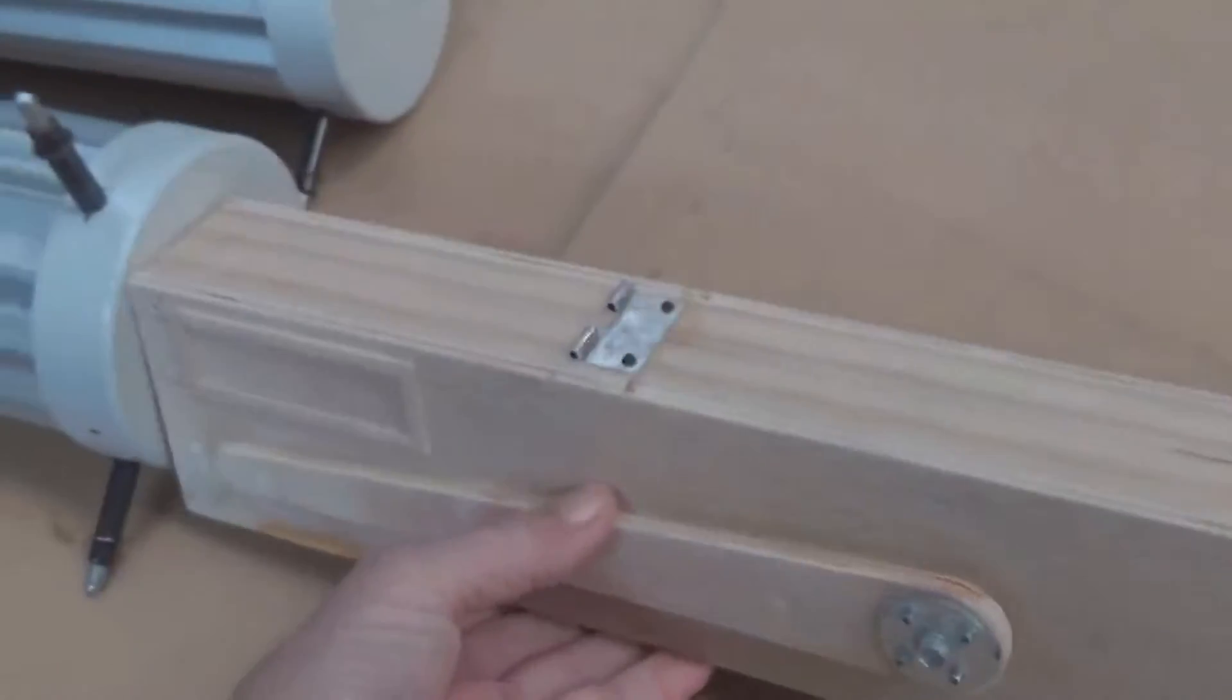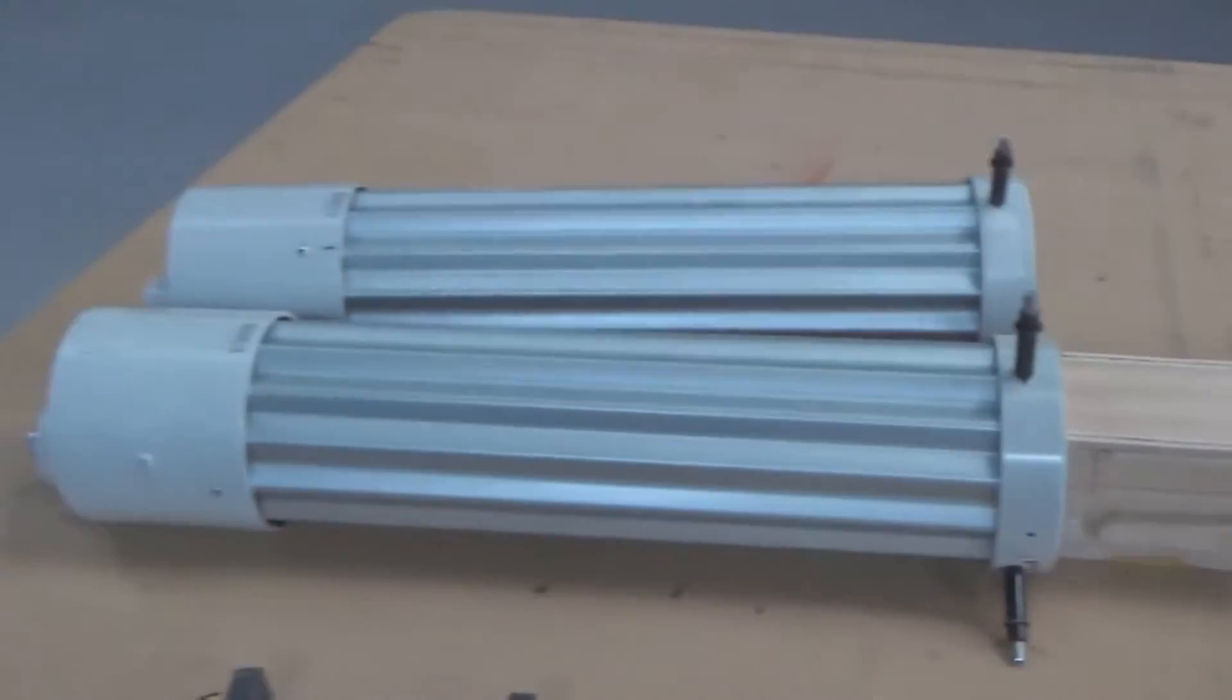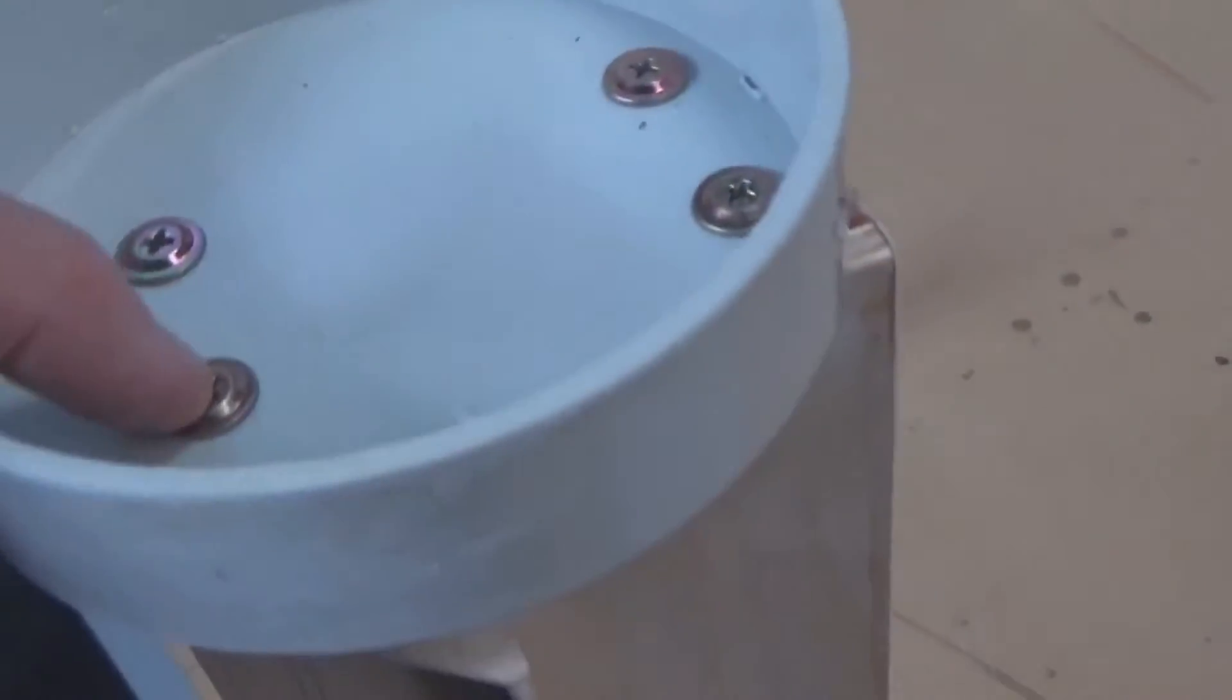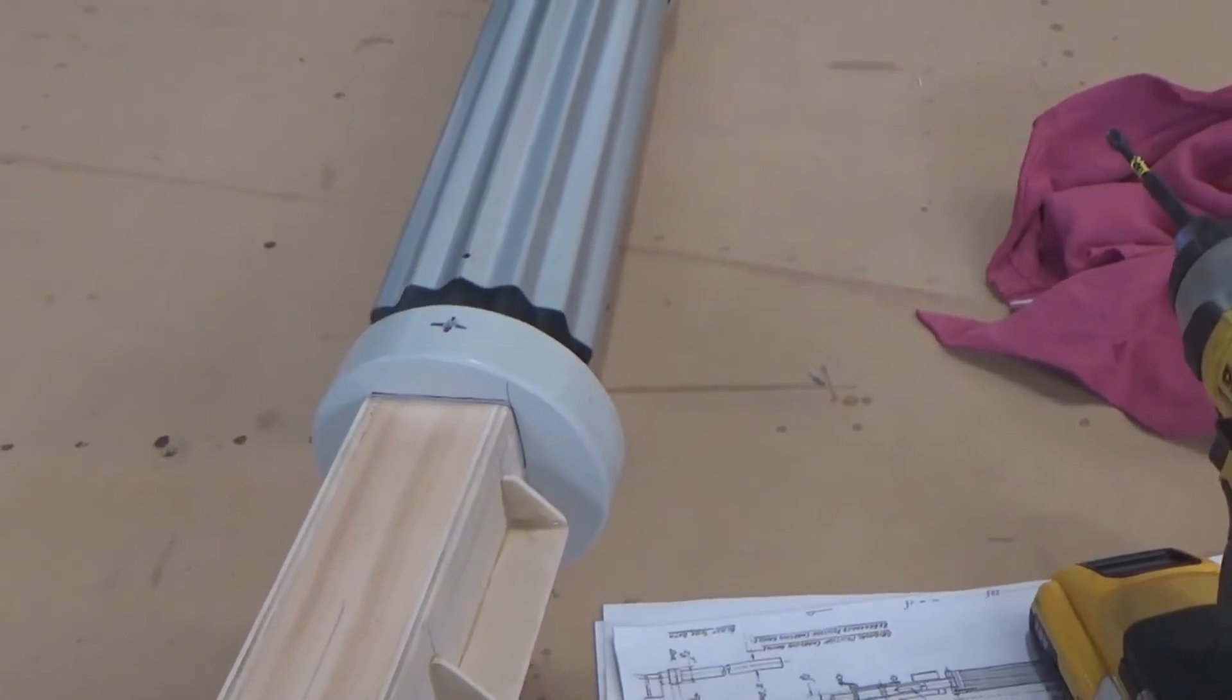And then that'll sit on the, that makes up the machine gun. Cap off. Just marked it. Glued it. Screwed it. And then that should bolt back on. Or rivet back on. So there we go.